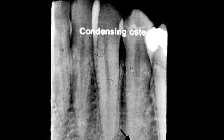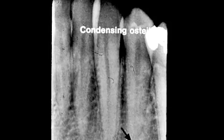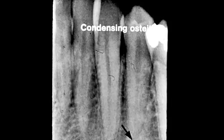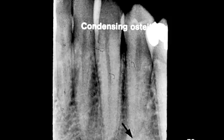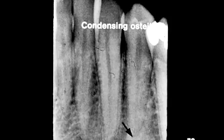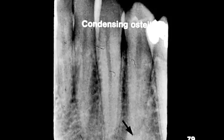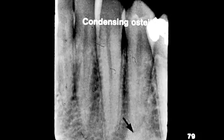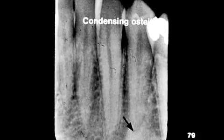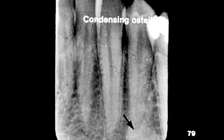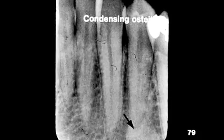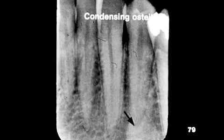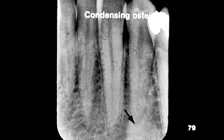Condensing osteitis is an opacity at the apex of the tooth. If we do a pulp test, we find that the tooth is non-vital. A similar opacity is known as sclerotic bone. Sclerotic bone can occur anywhere in the bone, but if it is at the apex of a tooth and we do a vitality test, the tooth is vital for sclerotic bone.